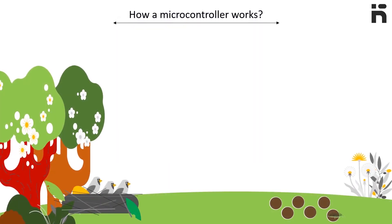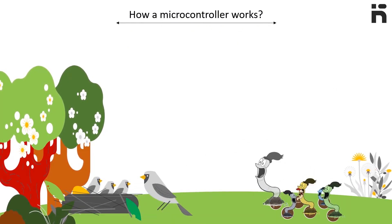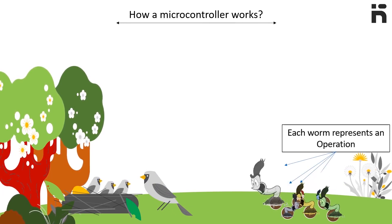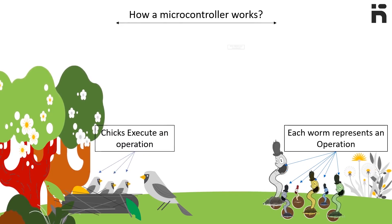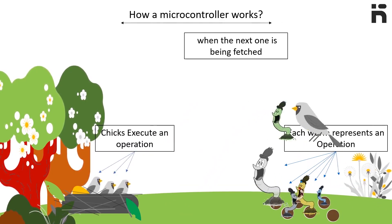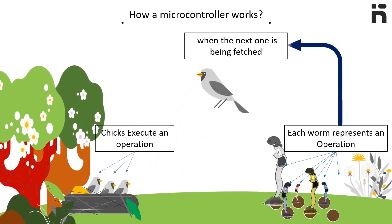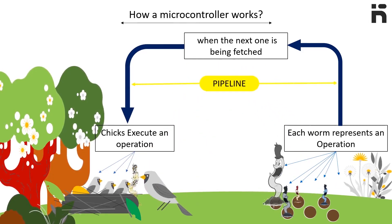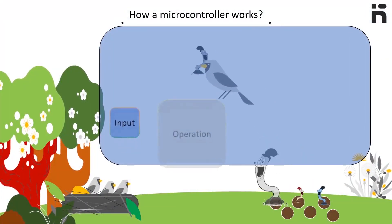We will understand the functioning of a microcontroller with the help of an example of a mother bird collecting worms for her chicks. Each worm represents an operation. The core — or the chicks in this case — executes an operation while the next one is being fetched. This simultaneous fetching and execution is called a pipeline, and it is a faster and more efficient way.